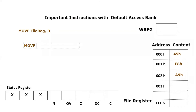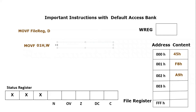We will write: MOVF 01h, W. Here we are moving file register at address 01h, whose content is FFh, and we want to move it to the working register. So what this instruction does is move the content of file register at address 01h — which is FFh — towards the working register. After execution, the working register will contain FFh.